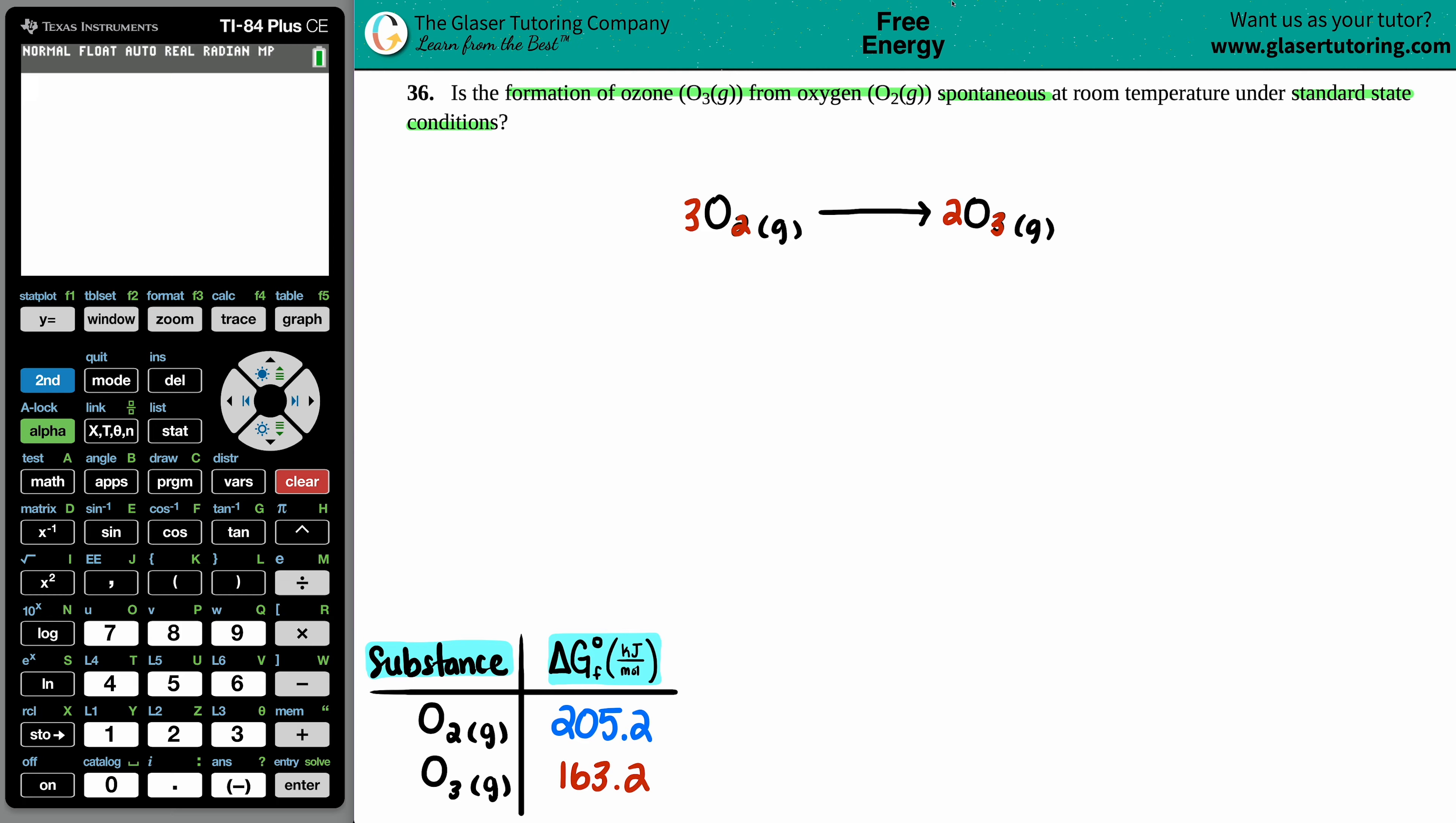Now we want to find out if this reaction is spontaneous. Spontaneous always comes from a delta G value. So in essence, we're solving for a delta G. Now they're telling us that we're at standard state conditions, right? So that means that I'm solving for a delta G naught.